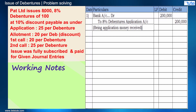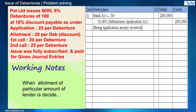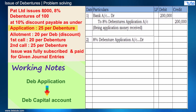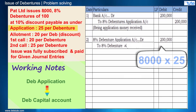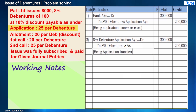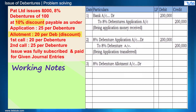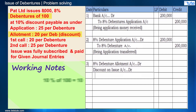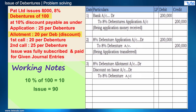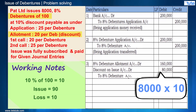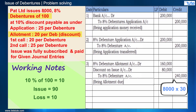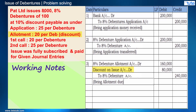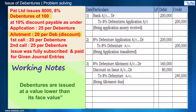Once the company decides on the allotment due to a particular number of lenders, the respective amount will be transferred from debenture application to debenture capital account. After that, we have the entry for allotment due on debentures. In our question, debentures are issued at a discount, which means that on the face value of 100 they were issued at 90, which is a loss and has to be debited. The discount on issue is a loss because the debentures are issued at a value lower than their face value.